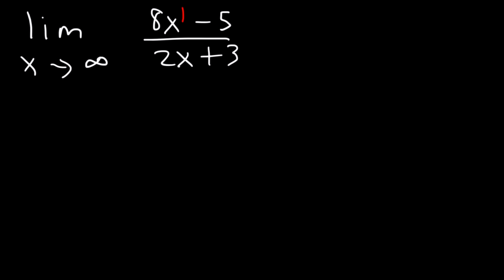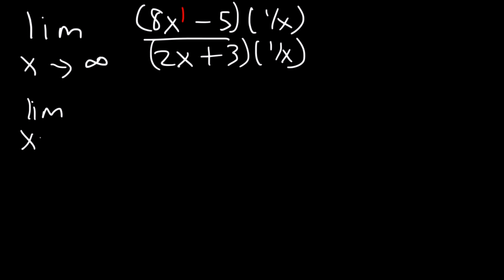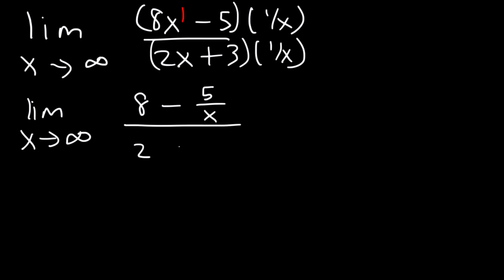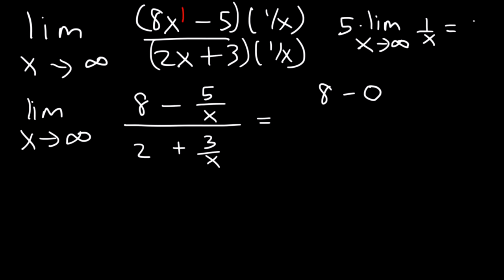Now let's prove it and show our work. I'm going to multiply the top and the bottom by 1 over x. So this is going to be the limit as x approaches infinity: 8x times 1 over x is simply 8, and then we have 5 times 1 over x, which is 5 over x. On the bottom, this is going to be 2 plus 3 over x. The limit as x approaches infinity of 5 over x is going to equal 0 — that's 5 times the limit of 1 over x, which is 5 times 0 = 0. Now 3 over x also turns into 0.